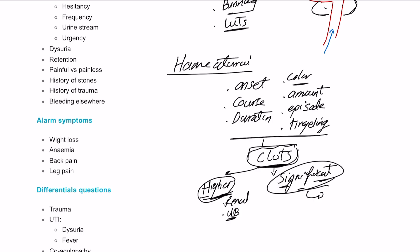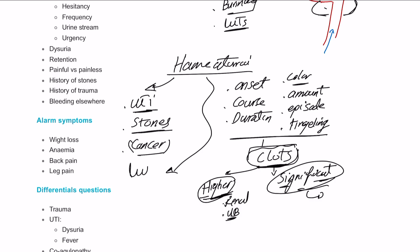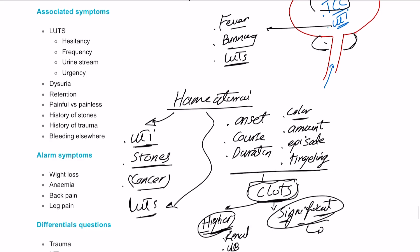We can ask about associated symptoms, including signs of UTI: fever, recent unusual sexual intercourse, or multiple sexual partners. Ask about renal stones, previous renal stones, and drinking habits — do they drink enough water? For cancer, ask about blood loss, night sweats, night fever, lumps and bumps anywhere in the body. Visible hematuria may also indicate cancer. Then ask about lower urinary tract symptoms: hesitancy, frequency, stream, urgency, incontinence, and retention, since blood clots might cause retention.